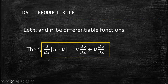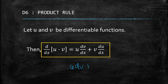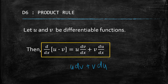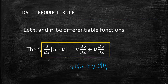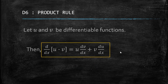In some books, to make it easy to memorize, they use the chant: u·dv plus v·du. So the derivative of u·v is just u·dv plus v·du. Now let's try to prove this.